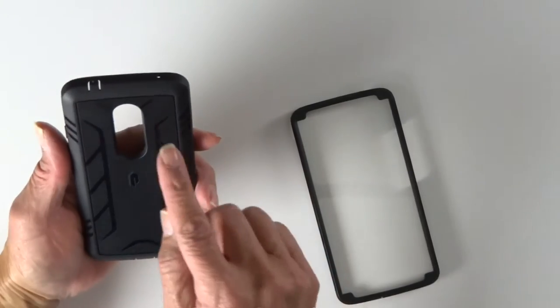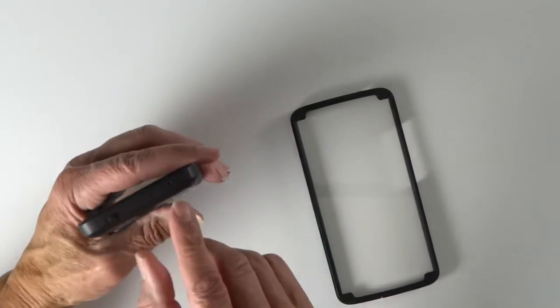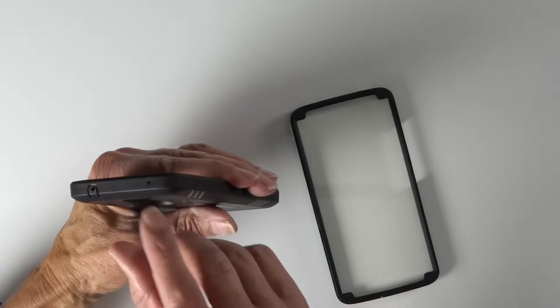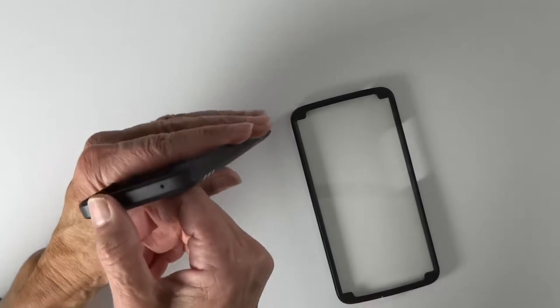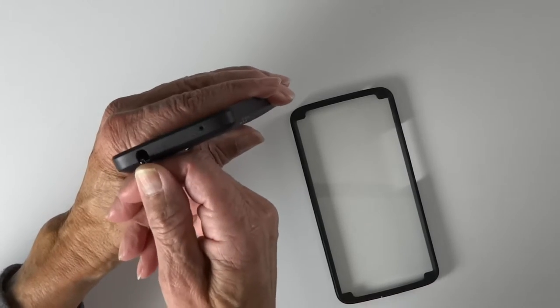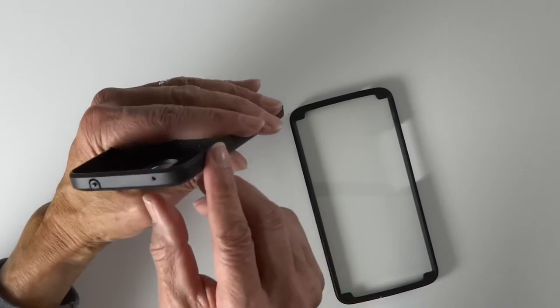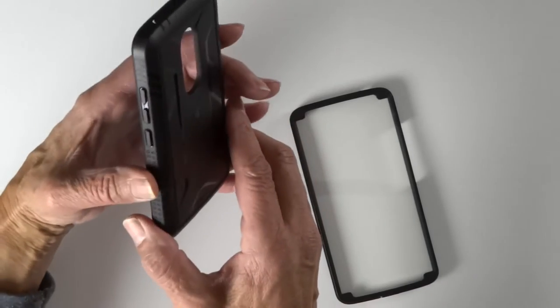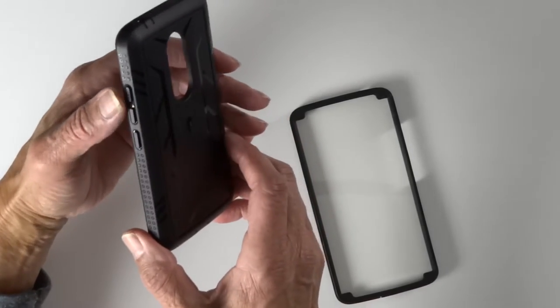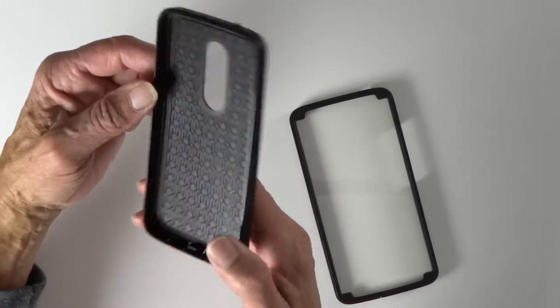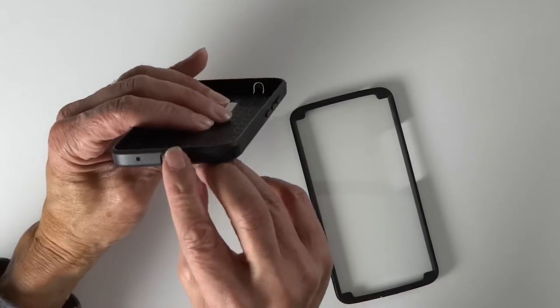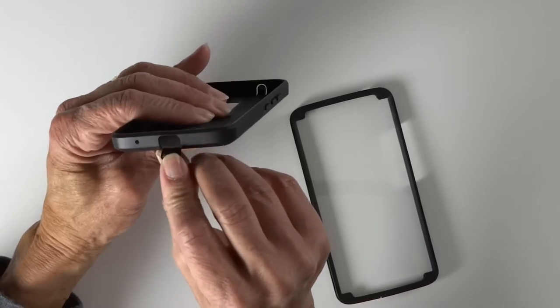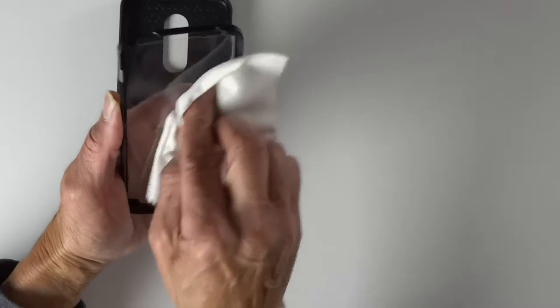So there's the back of the case. And you can see it's got all the proper cutouts, but it's also got covers to keep the lint and dust out of your phone. On top for the earpiece, it's got button covers on the sides, and on the bottom, put your USB-C in.